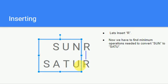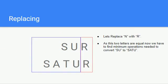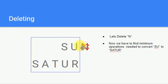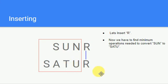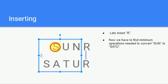Let me recap. When replacing, we replace N with R — since these two characters are equal, we find minimum operations to convert 'SU' to 'SATUR'. When deleting N, we find minimum operations to convert 'SU' to 'SATUR'. When inserting R beside 'SUN', those two R's are equal, so we ignore them and find minimum operations to convert 'SUN' to 'SATU'. These are the three operations.